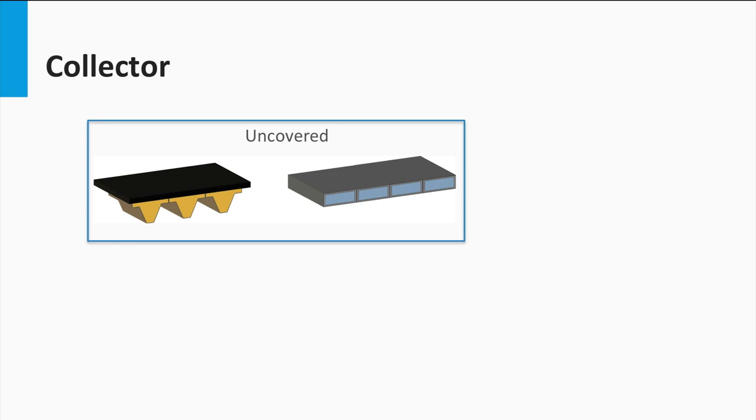Uncovered collectors don't have a transparent cover, so the sun strikes directly on the absorber surface, avoiding a good fraction of the reflection losses. It is used only for small differences in temperature with respect to ambient temperature, such as the ones in swimming pools.